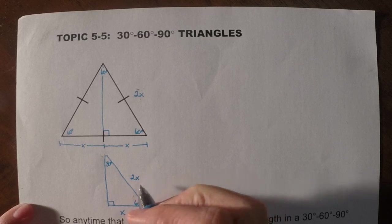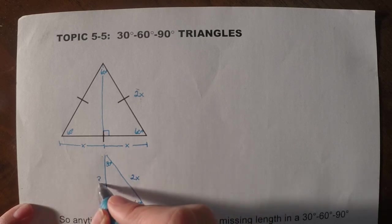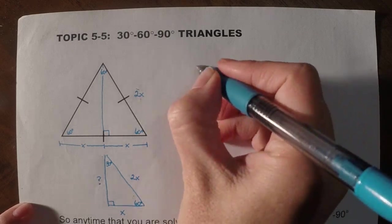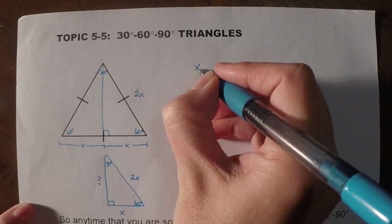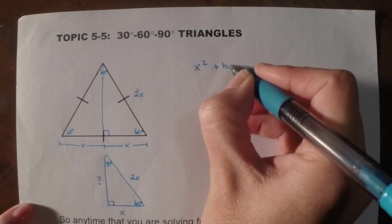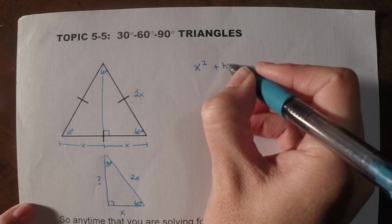And then we're going to use that to solve for our altitude or our height. So if I set it up, I would have x squared plus, we'll just put hypotenuse, I mean height,